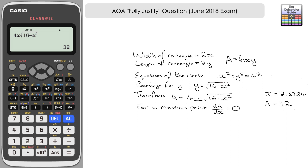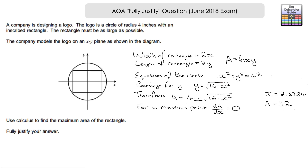Everything after where we set dA/dx = 0 on the calculator has given us no marks. I'm boxing this off and labeling it as verification. Hopefully it's correct, but since we haven't gone through the full method we can't be 100% sure. If our fully justified answer gives the same results, we can confirm we used the correct method.